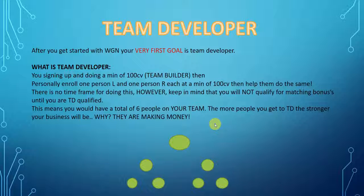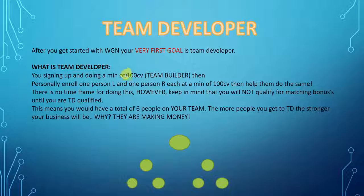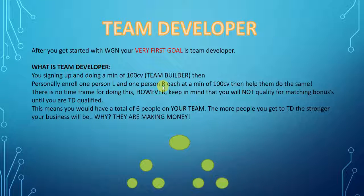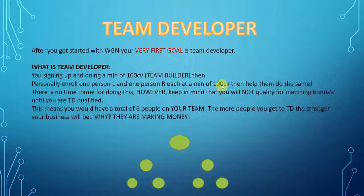Team developer — this is extremely important. Your first goal in this business is to get qualified, and team developer is part of that. So after you get started with WGN, you want to get to team developer. What is team developer? That is you signing up and doing a minimum of 100 CV, then personally enrolling one person on your left leg and one person on your right leg, each with a minimum of 100 CV.